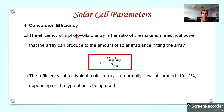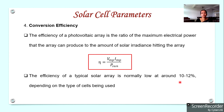The next parameter is conversion efficiency — the efficiency of a solar cell. It is the ratio of the maximum electrical power output from the solar cell to the solar irradiance (power) incident on it. Solar cells generally have very low efficiencies, with typical values in the range of 10 to 12 percent.